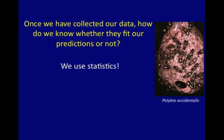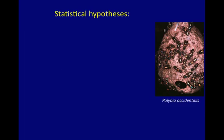So the question is: once we've collected our data, once London and Jean collected their data, how did they know whether they fit their predictions? Their prediction was that if they removed the envelope from treatment nests and left it intact in control nests, they would observe more parasitism of the treatment nests than the controls. We use statistics. Statistics are a tool that biologists use to determine whether or not our predictions are met with our experimental data.